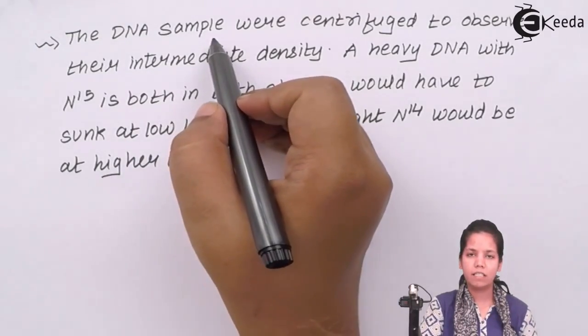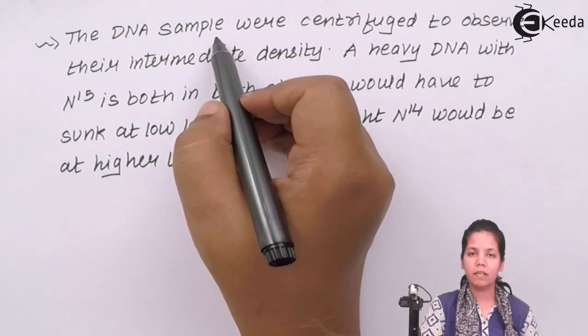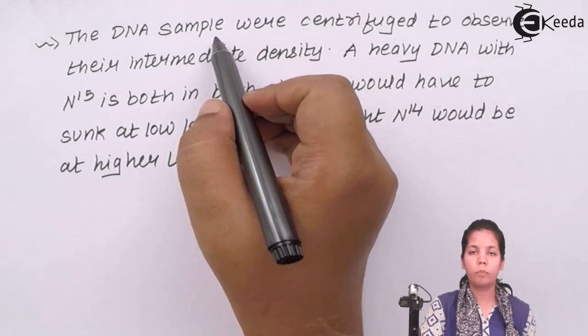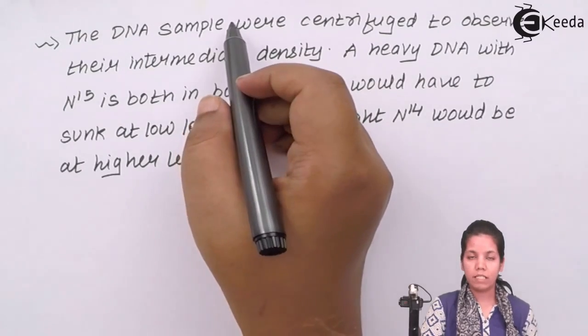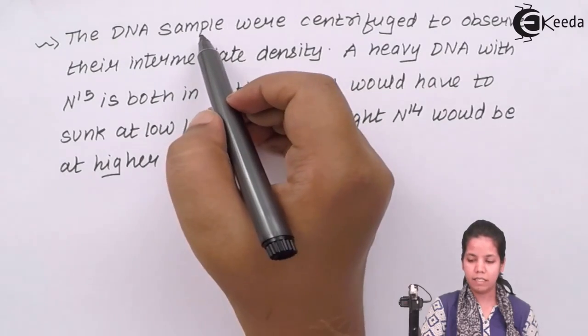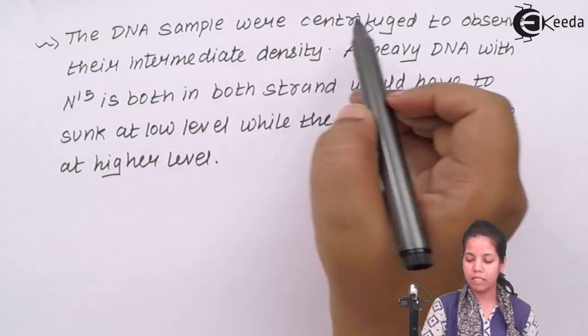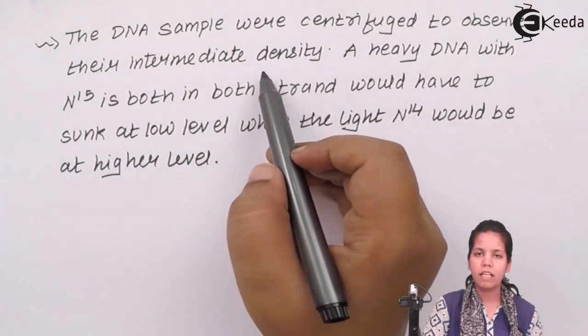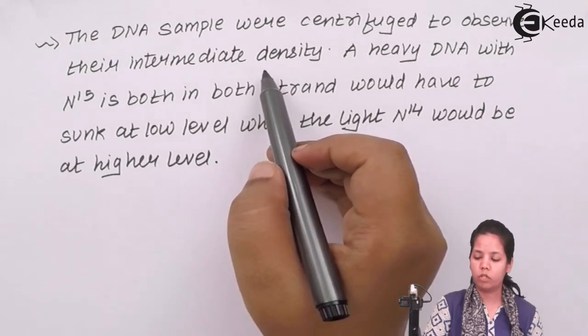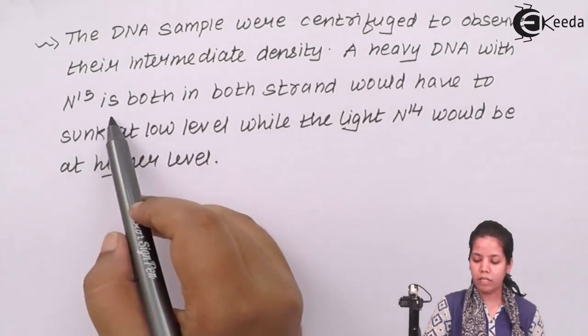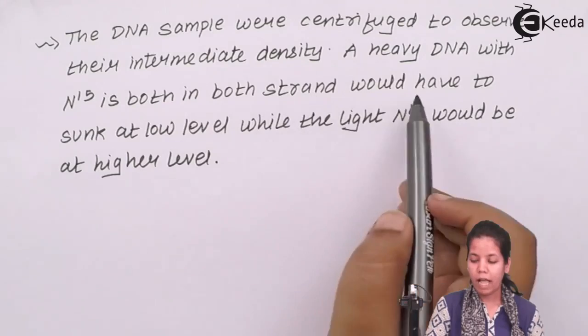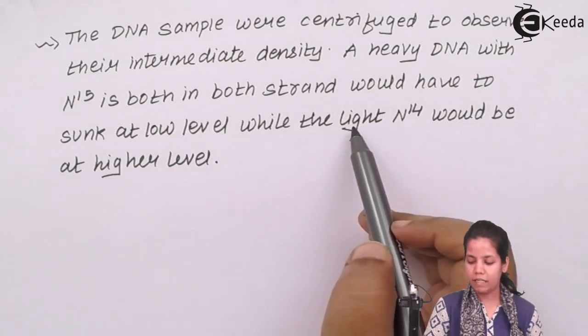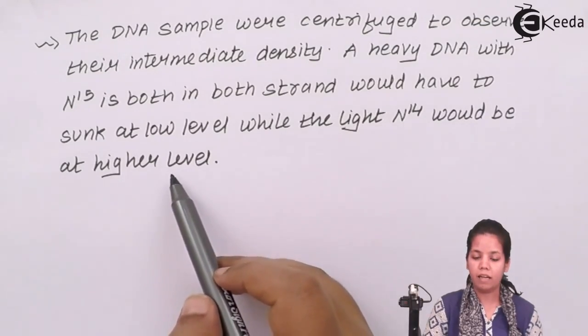The DNA samples after successive introspection or after successive breeding samples are found. N15 E. coli in different N14 and N15 isotope media for successive generations. Once it was done, then Meselson and Stahl took the DNA samples and the samples were centrifuged to observe the intermediate densities. A heavy DNA with N15 in both the strands would have to settle down or sink down in the solution of cesium chloride, while the light N14 would rise up to higher level.